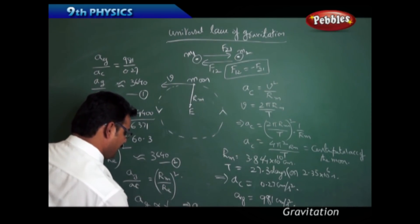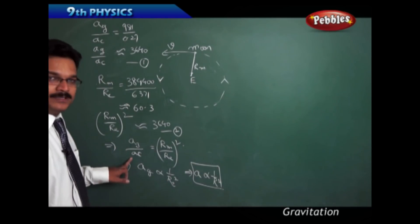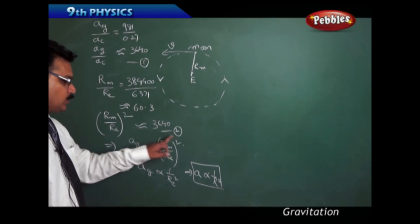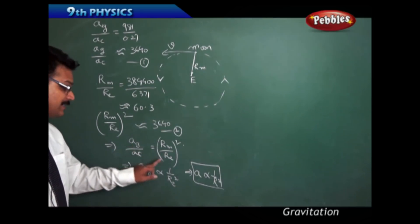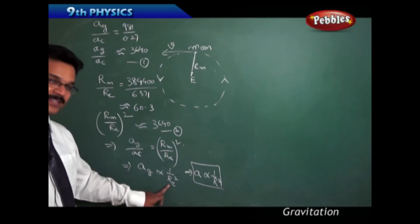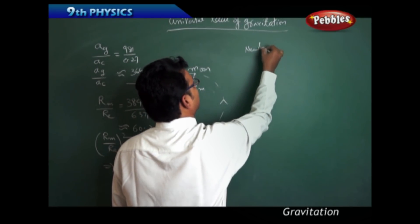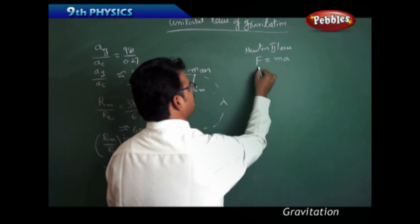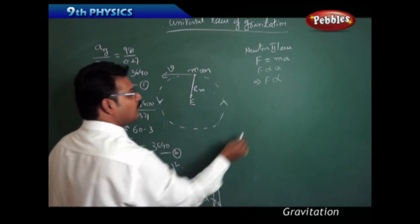So we can say a is inversely proportional to 1/r². The ratio of acceleration due to gravity to centripetal acceleration equals the square of the radius ratio, meaning acceleration due to earth is inversely proportional to r². From Newton's second law, F = ma, since F is directly proportional to a when mass is constant, we get F ∝ 1/r².